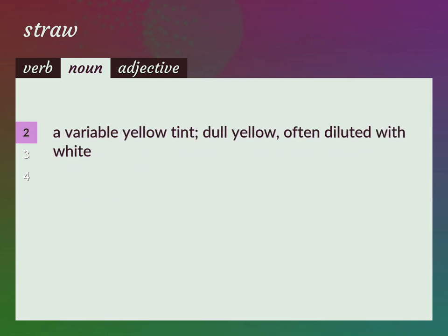A variable yellow tint. Dull yellow, often diluted with white. Pale yellow, wheat.